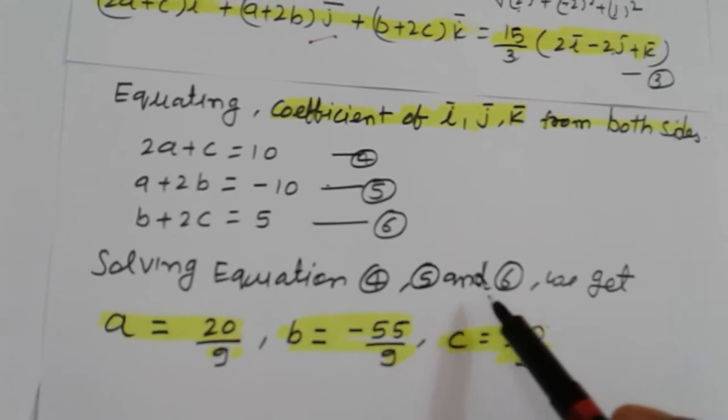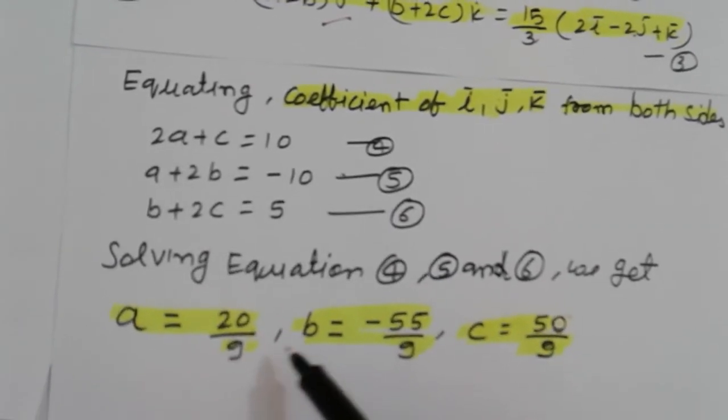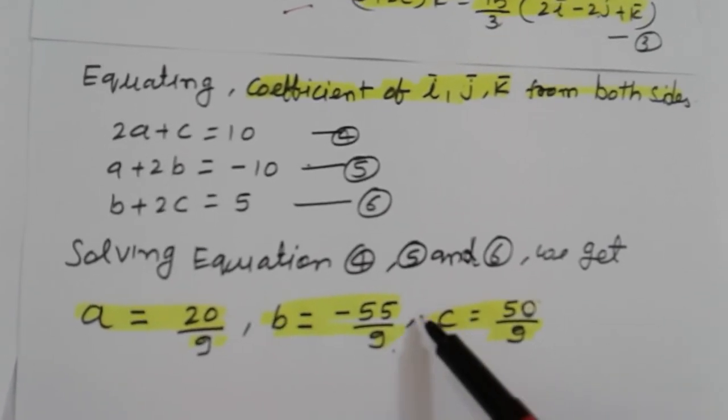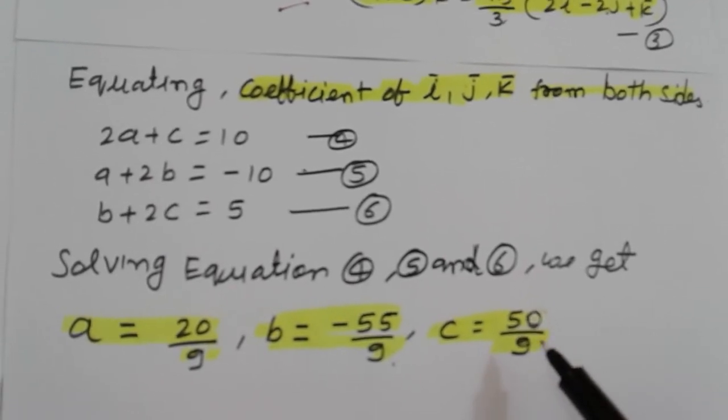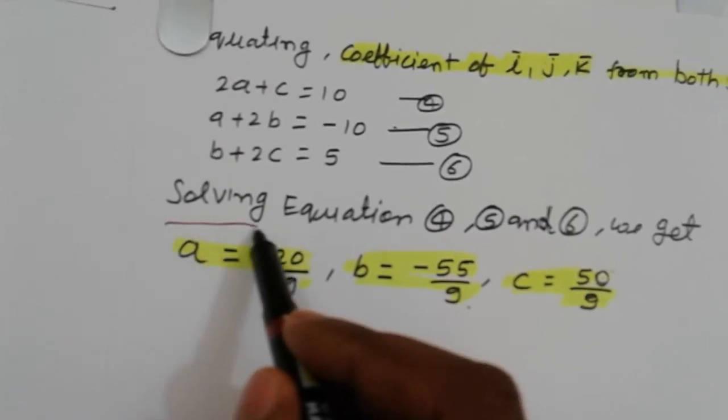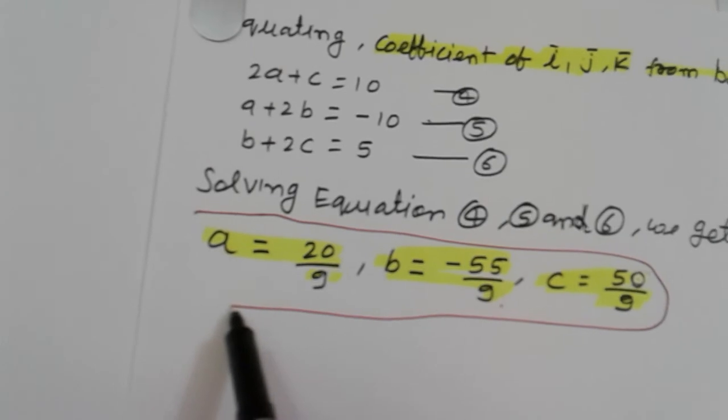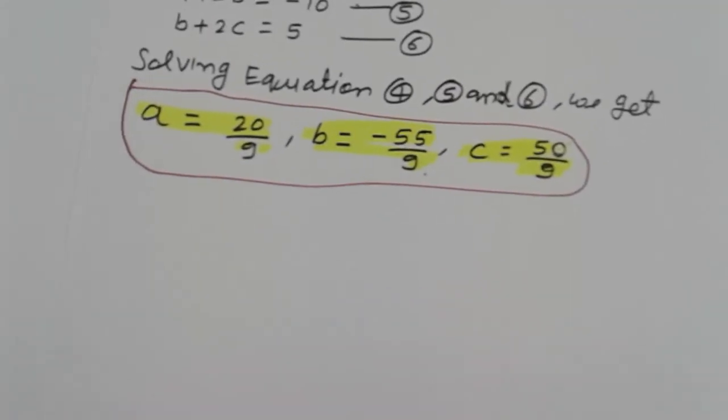Solving equations 4, 5, 6, we get a equal to 20/9, b equal to -55/9, and c equal to 50/9, which is the required value of a, b, c. Thank you.